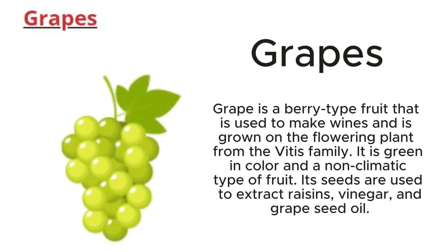Grapes: Grape is a berry type fruit that is used to make wines, and is grown on the flowering plant from the Vitis family. It is green in color and a non-climatic type of fruit. Its seeds are used to extract raisins, vinegar, and grape seed oil.